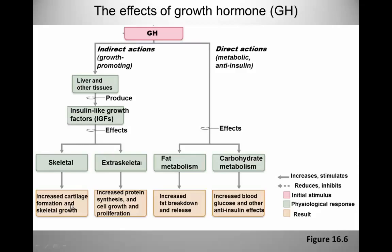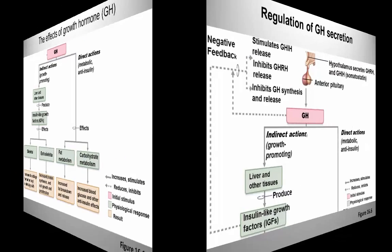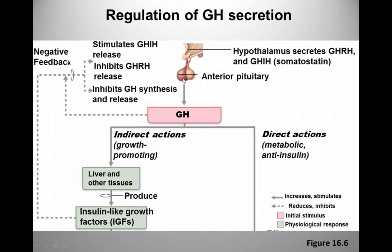In adults, growth hormone has a so-called glucose sparing effect. Here the glucose in the blood is spared for use by the brain. This is especially important during times of fasting when resources are limited. This occurs daily when we are sleeping, and it is known that growth hormone levels rise during these times.